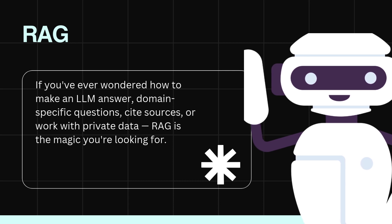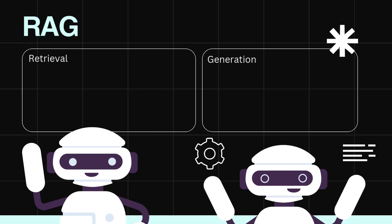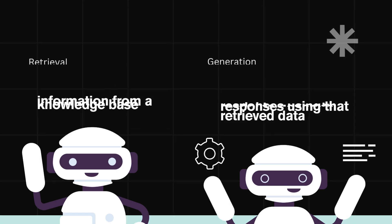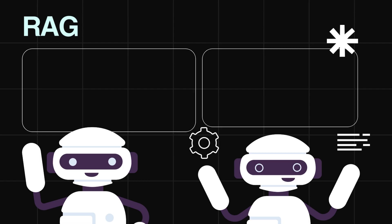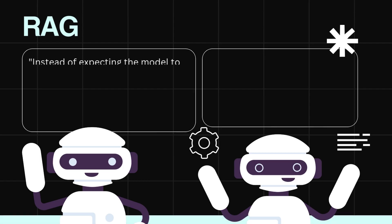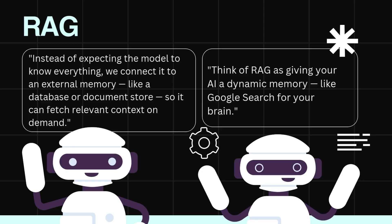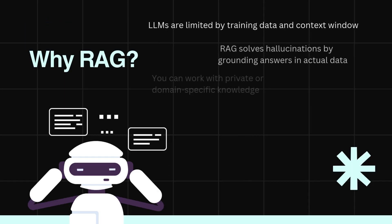At its core, RAG is a technique that combines two components. Retrieval: pulling relevant information from a knowledge base. Generation: using a language model to generate responses using that retrieved data. Instead of expecting the model to know everything, we connect it to an external memory — like a database or document store — so it can fetch relevant context on demand. Think of RAG as giving your AI a dynamic memory, like Google Search for your brain.